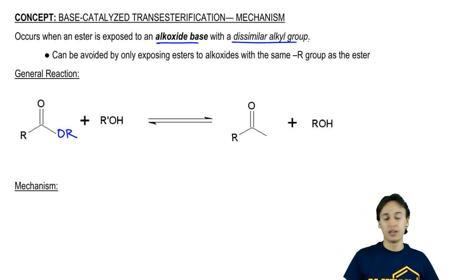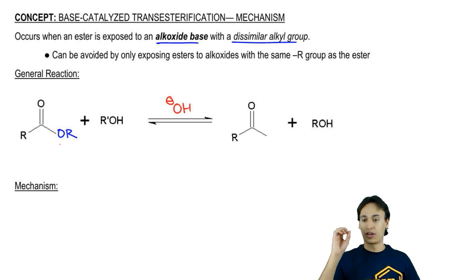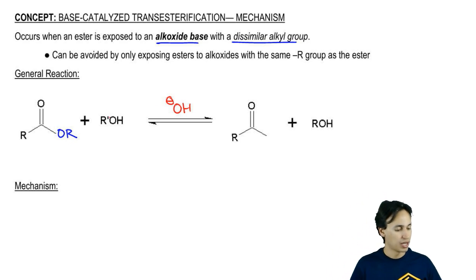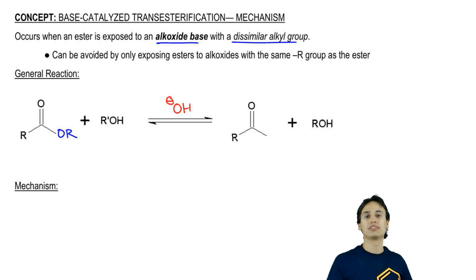If I'm using an alkoxide base, I'm in a basic environment because it's base-catalyzed. Imagine that my alcohol, instead of having an R group, has R prime. R prime just means it's different, it's something different. Maybe one's a methyl and one's an ethyl.